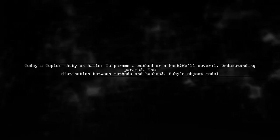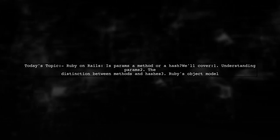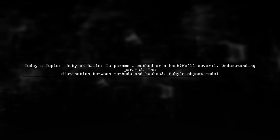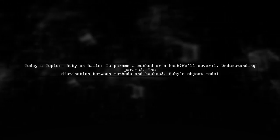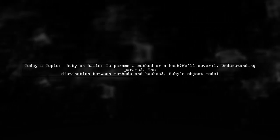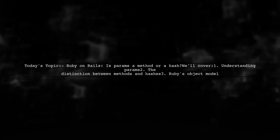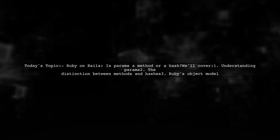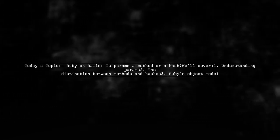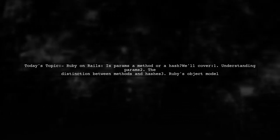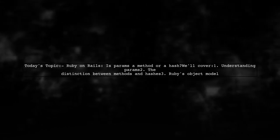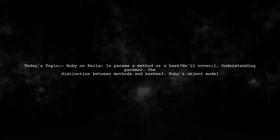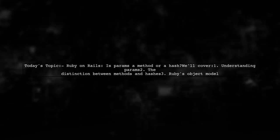Welcome to our Ruby on Rails Deep Dive. Today we're tackling a question that many developers encounter as they navigate the framework. Our viewer is curious about the nature of the params feature in Rails. Is it a method or a hash? Let's explore this intriguing topic together.